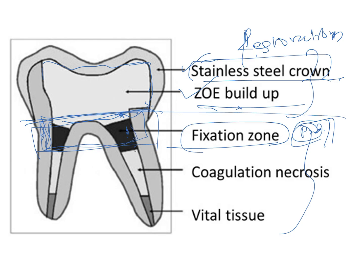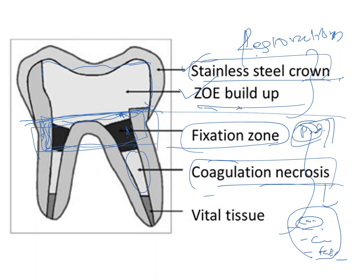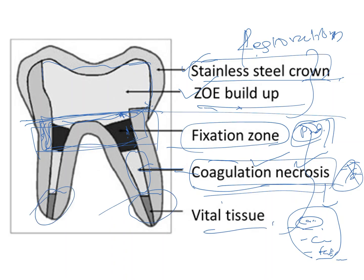Below the fixation zone is coagulative necrosis. Necrosis can be of many types — coagulative, caseous, fat tissue necrosis — but in formocresol pulpotomy, coagulative necrosis occurs. This is an important MCQ topic. The apical one-third of the radicular pulp remains as vital tissue, and preserving this vitality is the goal of the procedure. Immediately near formocresol is fixation zone, then coagulative necrosis, then vital tissue.